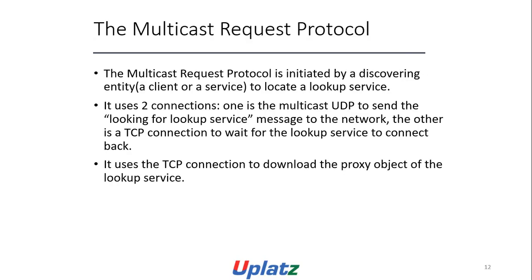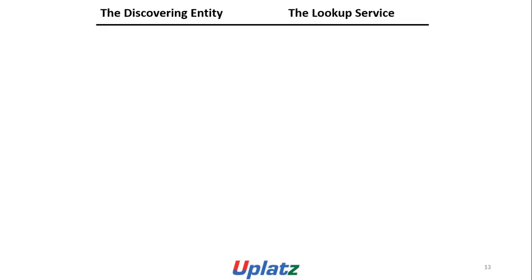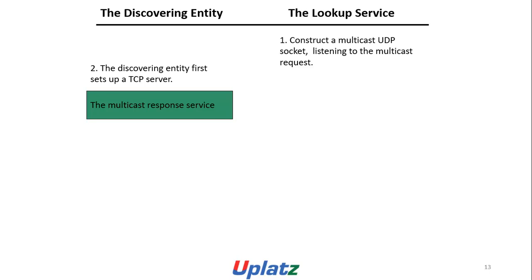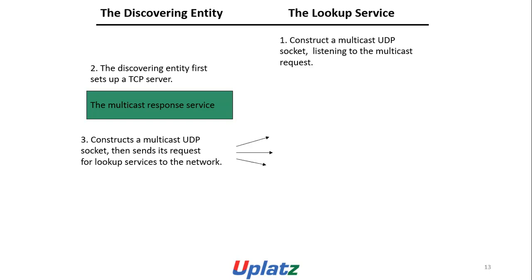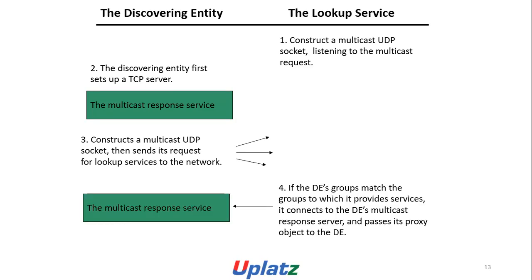The Multicast Request Protocol is initiated by a discovery entity — a client or service — to locate a lookup service. It uses two connections: one is a multicast UDP request to send the 'looking for lookup service' message to the network, and the other is a TCP connection to wait for the lookup service to connect back. It uses a TCP connection to download the proxy object of the lookup service. The discovery entity sets up a TCP server (multicast response service) and constructs a multicast UDP socket. The lookup service constructs a multicast UDP socket, listens for the multicast request, and when the groups match, connects to the multicast response server and provides its proxy object.